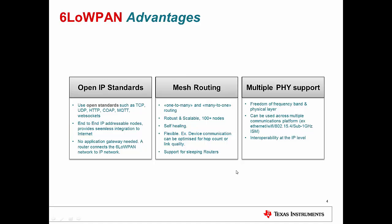Multiple PHY support is the best advantage I have seen in 6LoWPAN — the IPv6 connectivity and the independent PHY selection. You are independent to select any PHY; it is not dependent on any physical layer. You can base your solution on sub-1 GHz or 2.4 GHz. As per your configuration, specification, and comfort level, you are free to use the physical layer of your choice.